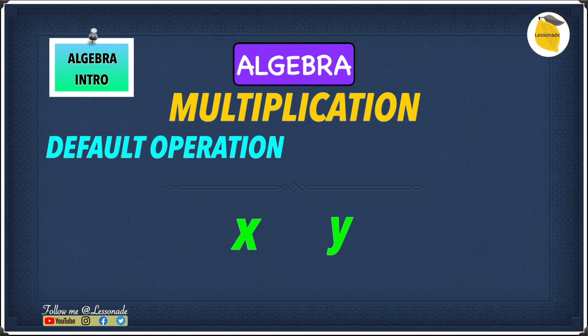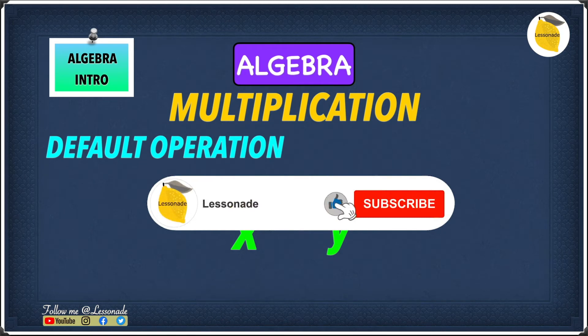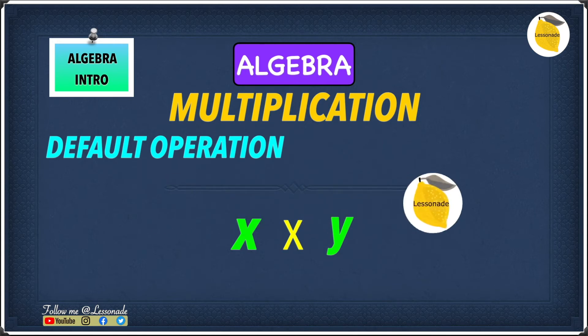So if there is no sign between a number and a symbol or between two symbols, it's automatically considered as a multiplication question. So x times y.